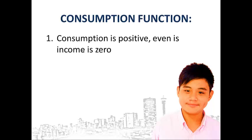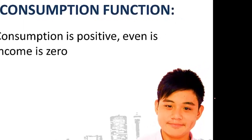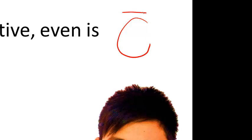One. Consumption is positive, even if income is zero. If Joan loses his job and has no income, he's still going to consume goods, because he has to eat and he has to live somewhere. He will borrow money, or use some of his savings. This we call autonomous spending.